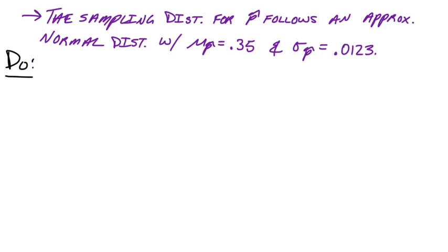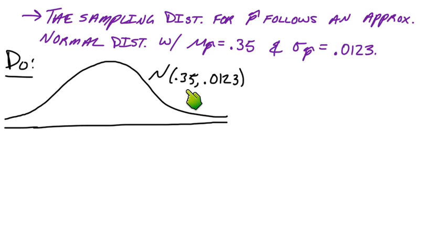So we are ready for the do step. It's time to actually do some stats calculations. And let's start with drawing that normal curve. So it's approximately normal. Let's give it some labels. We know it's normal. The mean is 0.35. Standard deviation is 0.0123. So we can go ahead and mark off the mean here in the middle. There's 0.35.